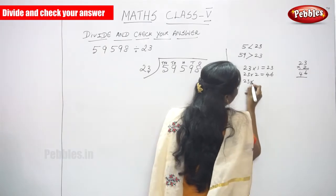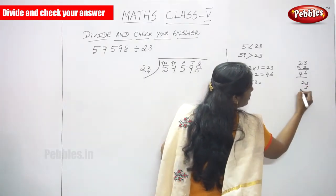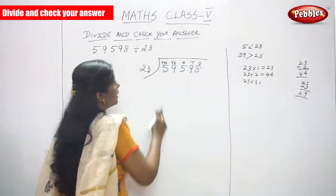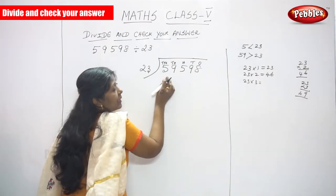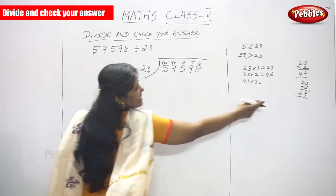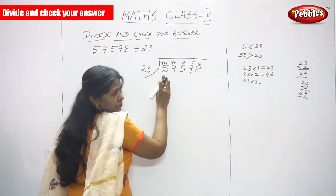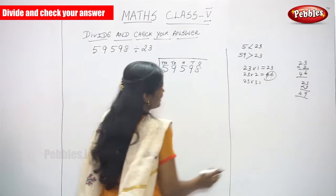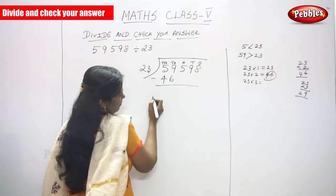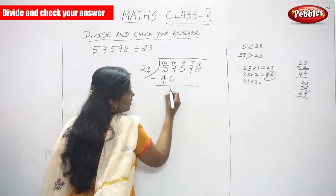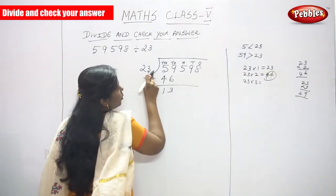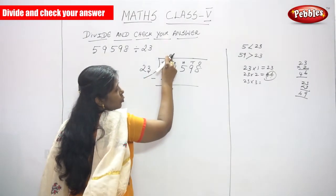So again, 23 into 3: 3 threes are 9, 2 threes are 6 — that gives 69. But you have to write the number less than 59. 69 is greater than 59, so you choose 46. 46 is less than 59. You have to subtract. 9 minus 6 is 3, 5 minus 4 is 1. So the quotient you have to write — don't forget to write the quotient.